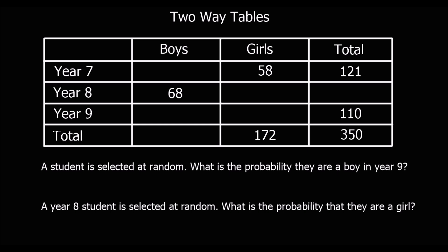Pause the video and try this one yourself. Starting here: 121 plus 110 is 231. What do you add to 231 to get 350? 19 to make 250, then another 100, so that's 119. We've got 68 and 119, so adding 1 to get to 69 then another 50 gives 51. Then 58 and 51 is 109, so adding 3 to get to 112 and then another 60 gives 63.